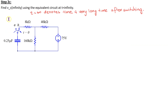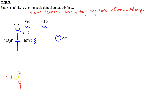The next step is to find Vc(∞). T equals infinity denotes a very long time after switching has occurred. Therefore, Vc(∞) is the voltage across the capacitor a long time after switching. When the switch has been in position B for a very long time, the capacitor will be under steady state, and under steady state a capacitor acts as an open circuit to DC. Thus, we replace the capacitor by an open circuit, and the voltage across it is Vc(∞), which we find using circuit analysis.